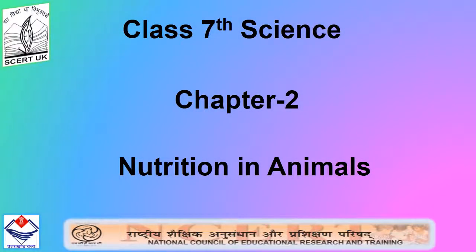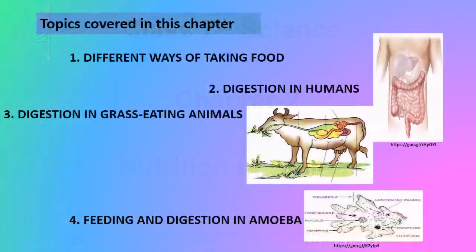Today we are going to discuss the second chapter of Class 7 Science: Nutrition in Animals. The topics we will cover are: different ways of taking food, digestion in humans, digestion in grass-eating animals, and feeding and digestion in amoeba.